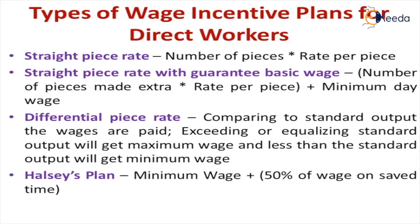For example, in the differential piece rate, if the standard is 100 products and he makes more than that, he gets the maximum wage; if less, he gets the minimum wage. The fourth plan is Halsey's plan, which states minimum wage plus 50% of the wage on saved time. The time saved while doing the job is calculated, and for that saved time, a maximum of 50% of the corresponding wage can be given as incentive, added to the minimum wage.